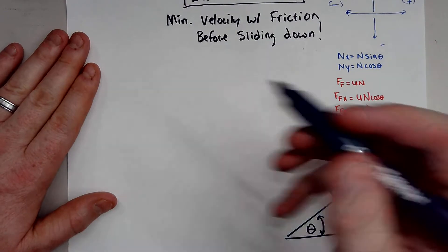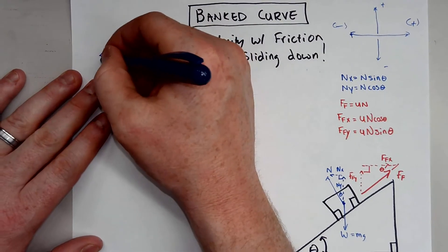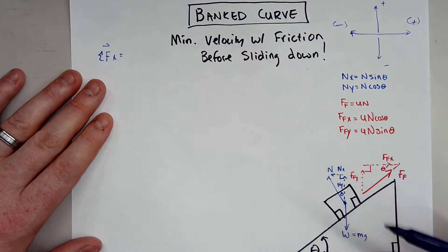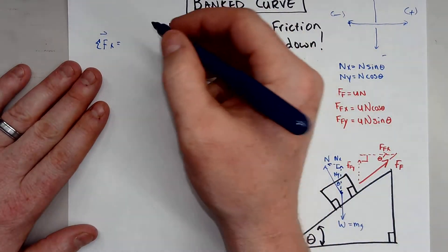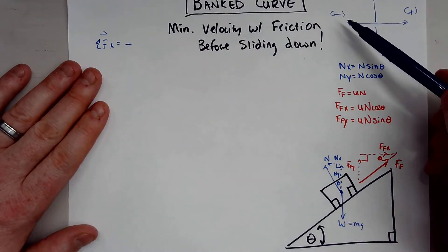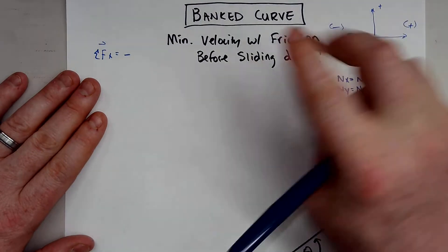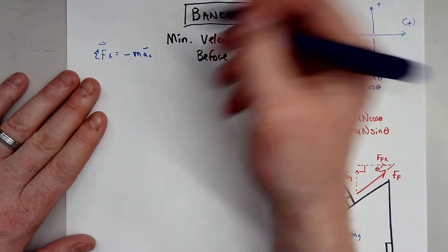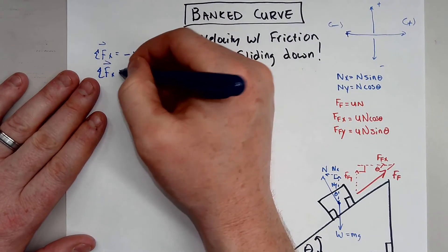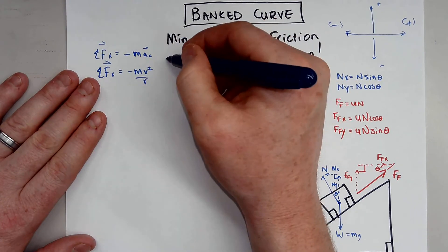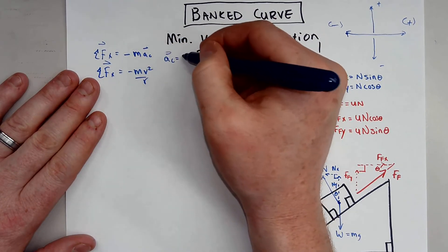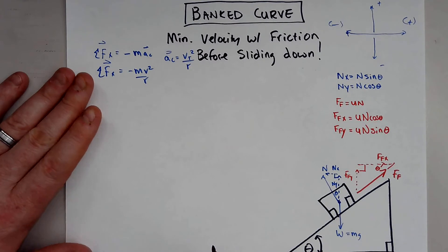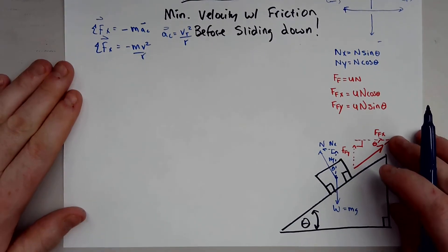Let's solve for the x-direction. All forces in the x-direction must equal the centripetal force because the object is still going around a corner. The centripetal force is going toward the center, so it's negative — negative m·ac, which equals negative m·v² / r, since the centripetal acceleration around a circle is v² / r, where v is the tangential velocity.